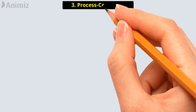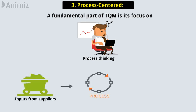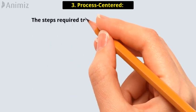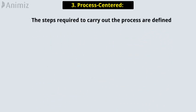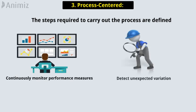Principle 3: Process-Centered. A fundamental part of TQM is its focus on process thinking. A process is a series of steps that take inputs from suppliers and transform them into outputs that are delivered to customers. The steps required to carry out the process are defined, and performance measures should be continuously monitored in order to detect unexpected variation.